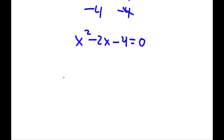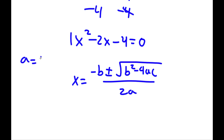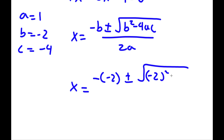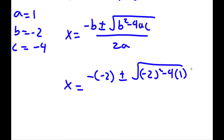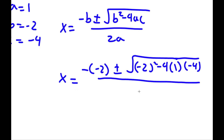Now I have a quadratic equation and to solve this I'm going to use the quadratic formula: negative b plus or minus the square root of b squared minus 4ac, all over 2a. In this case a is equal to 1, b is equal to negative 2, and c is equal to negative 4. So x equals negative negative 2 plus or minus the square root of negative 2 squared minus 4 times 1 times negative 4, all over 2 times 1.